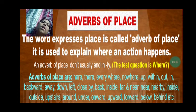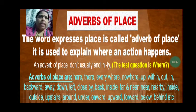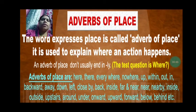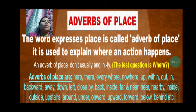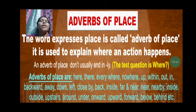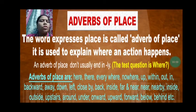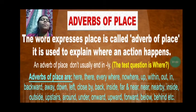An adverb of manner tells how the action was done. Now, an adverb of place will tell where the action is being done or has been done. So the word that expresses place is called adverb of place. It is used to explain where an action happens.